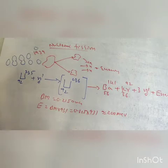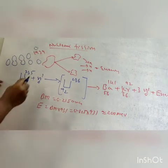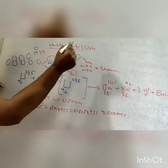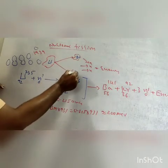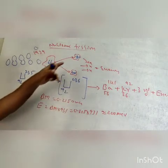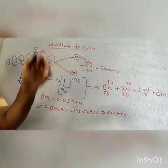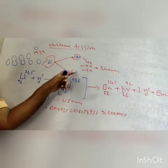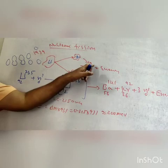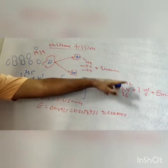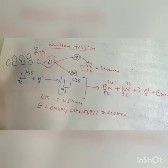The process in which heavy nucleus splits up into two nuclei of comparable mass with releasing large amount of energy is called nuclear fission.